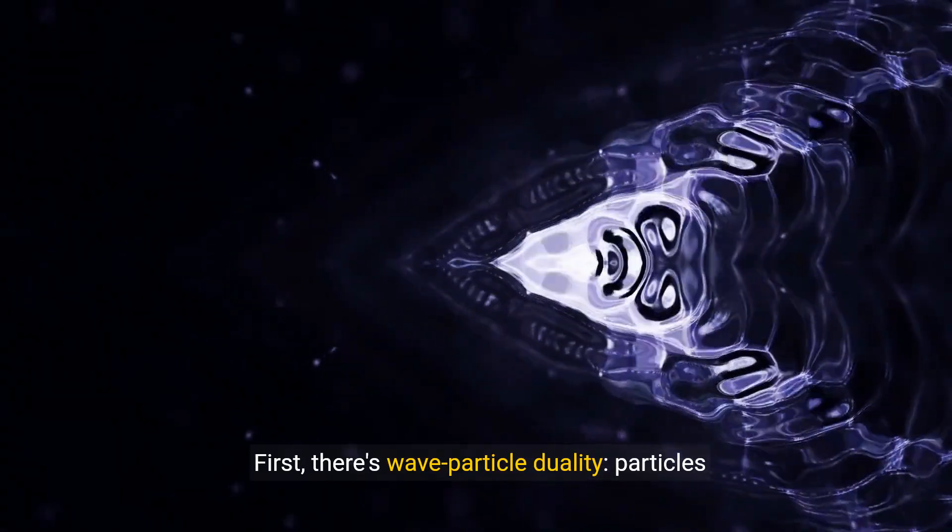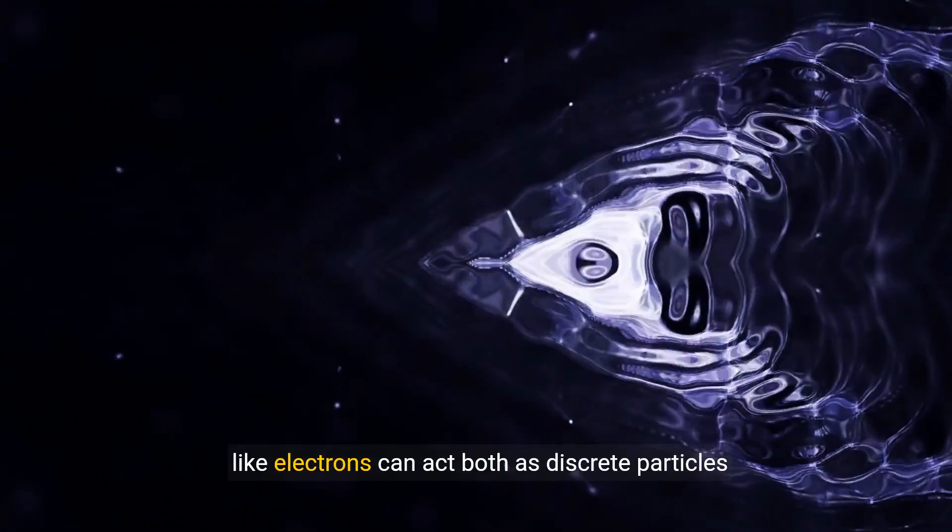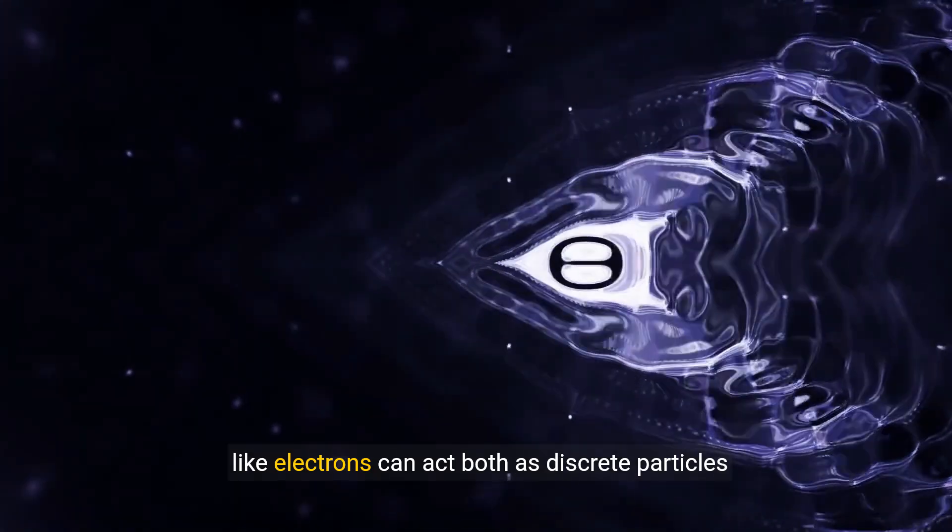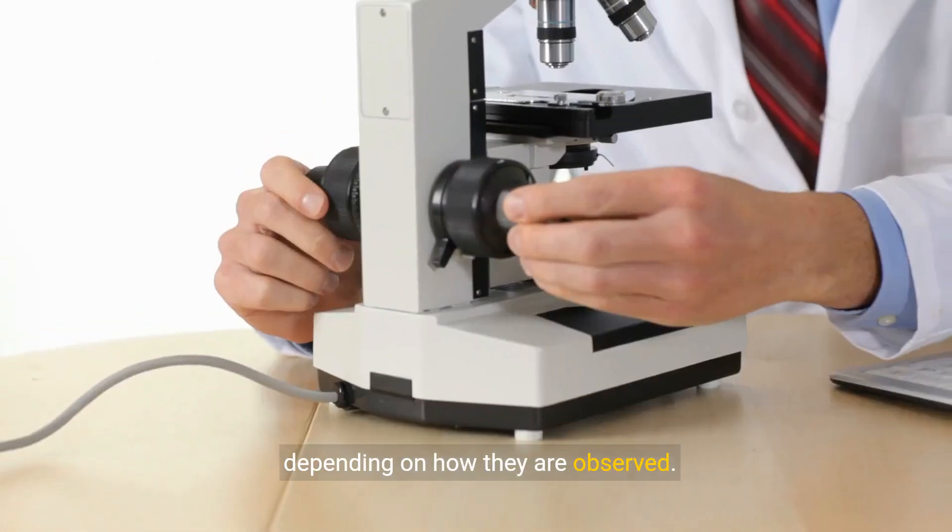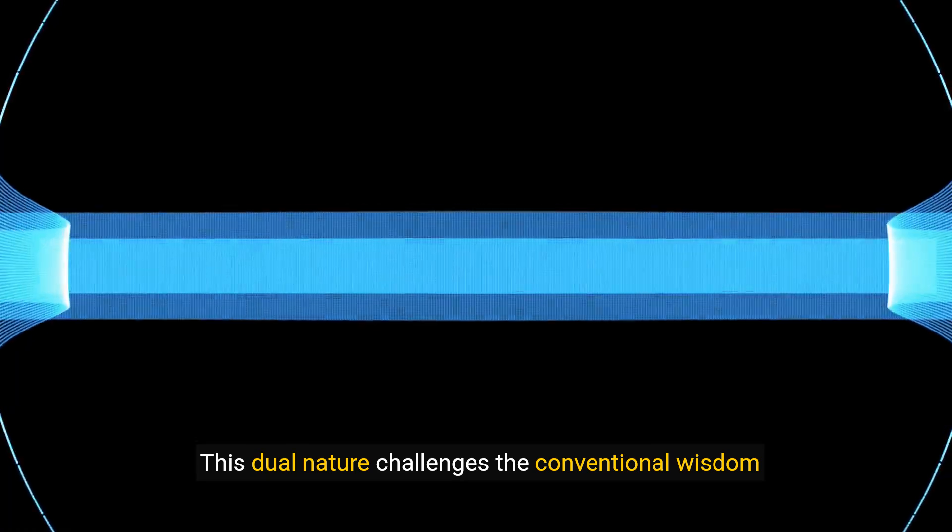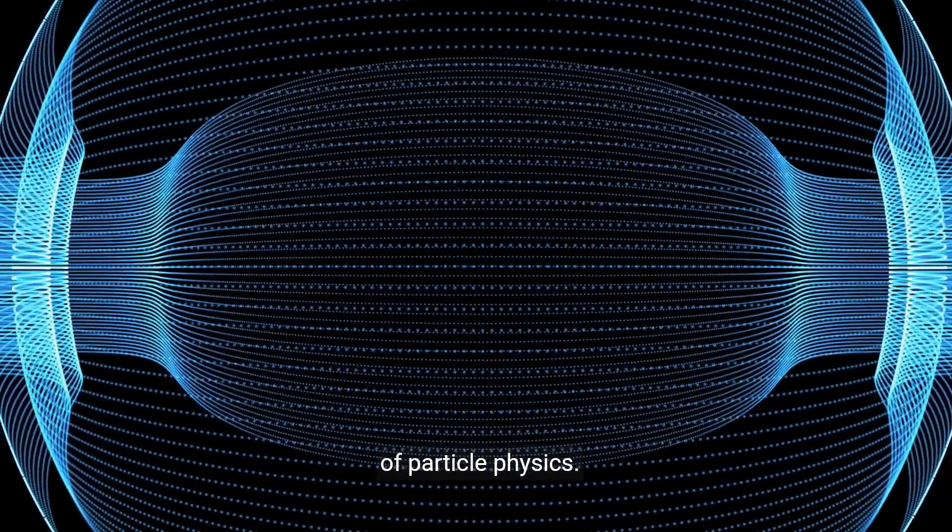First, there's wave-particle duality. Particles like electrons can act both as discrete particles and continuous waves, depending on how they are observed. This dual nature challenges the conventional wisdom of particle physics.